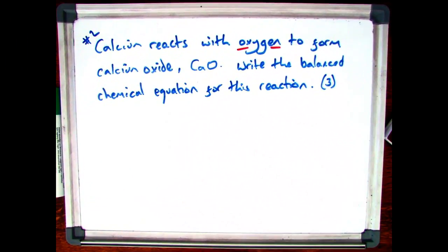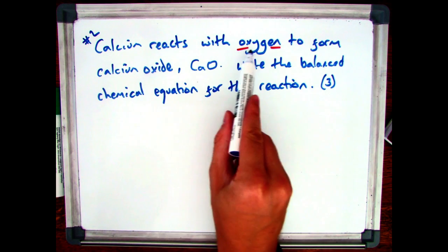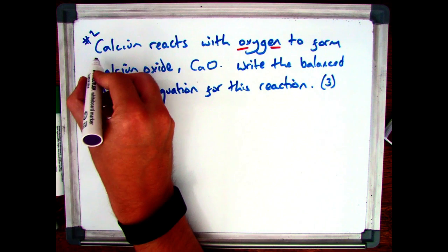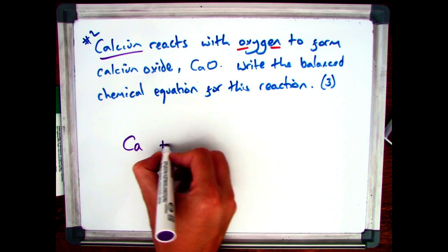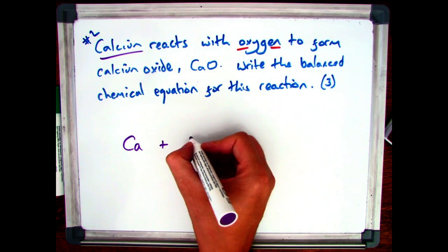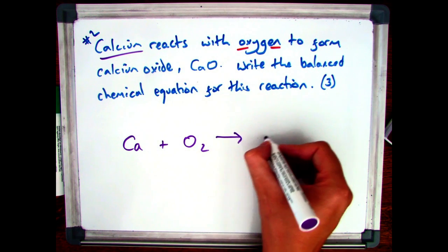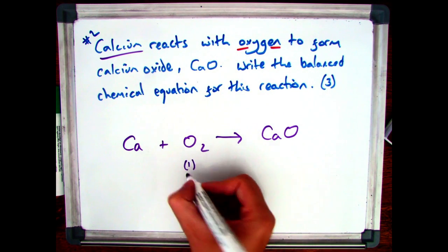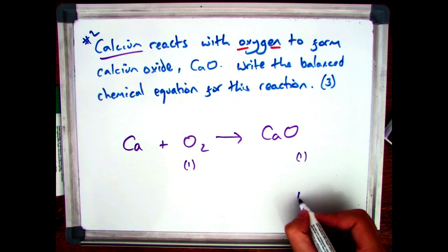Let's move on to the second example. This one says calcium reacts with oxygen to form calcium oxide, CaO — write the balanced chemical equation for this reaction. The first step is find calcium on the periodic table, which is Ca. Oxygen we now know is diatomic, so it's O2. And calcium oxide we've been given. So you get one mark for the reactants and one mark for the products.